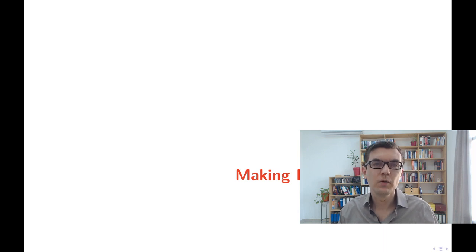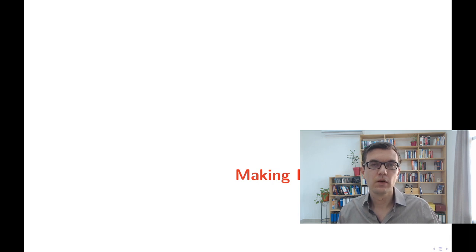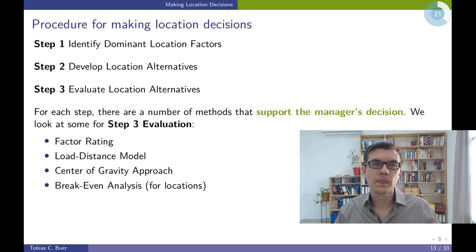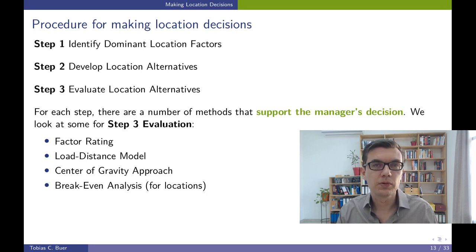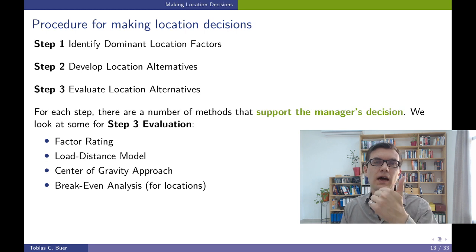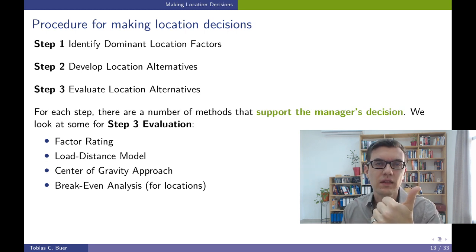How can we find out what is the best location for our facility? In general, there is a straightforward three-step procedure. The first step is to identify which are the factors that are important for making the location decision.